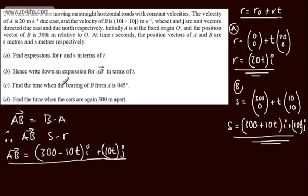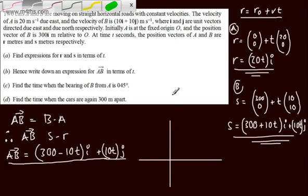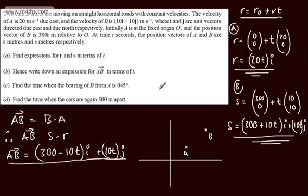In part C, we need to find the time when the bearing of B from A is 45 degrees. Now with this particular approach that I'm going to use, let's think of a couple of ways to do it, rather than just going for one. What we're going to have is the following. If we've got the bearing of B from A, we've got A just here. So from A up to B. This is a 45 degree angle.